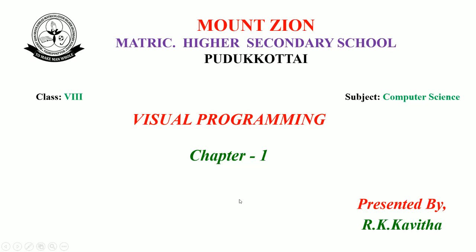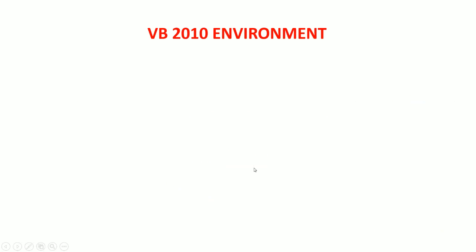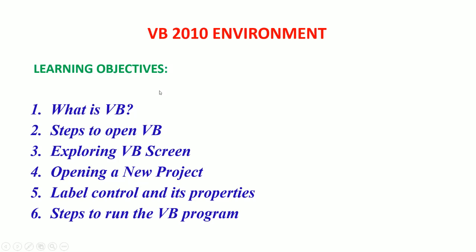Good morning students. Today under visual programming, it is unit number two, chapter number one — the VB 2010 environment. The learning objectives are: what is VB, what is meant by VB, steps to open VB, exploring the VB screen, parts available in the VB screen, steps to open a new project, label control and its properties, and steps to run the VB program.